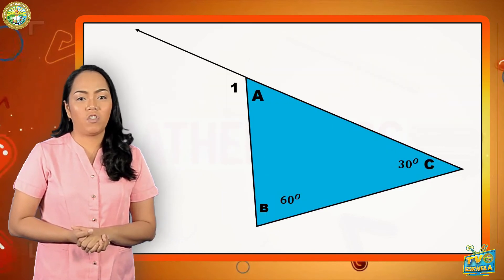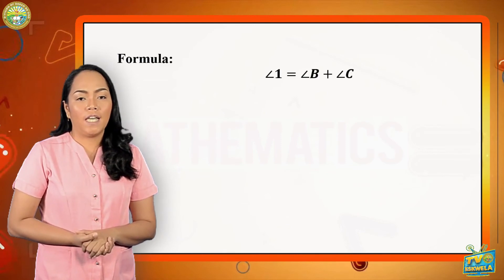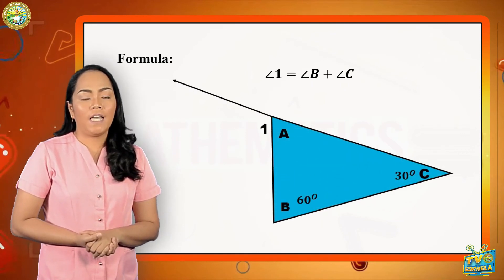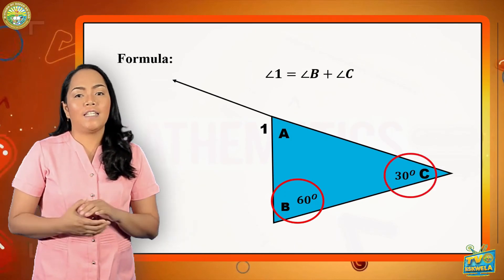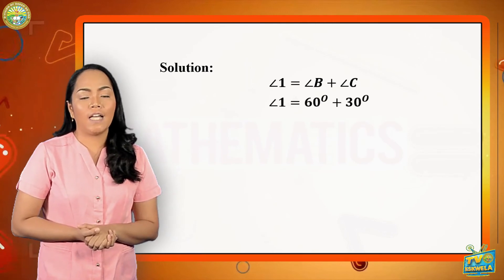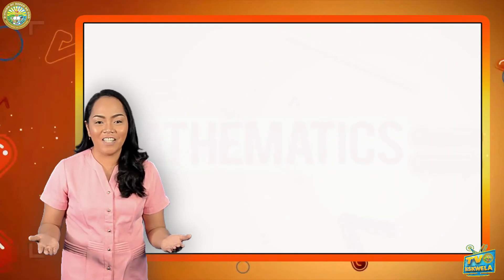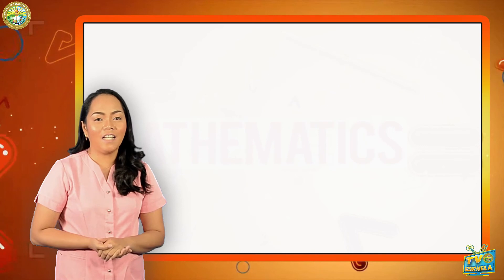Example: find the measure of angle 1 using the two remote angles. Angle 1 is equal to angle B plus angle C. Let us practice with Test 1.